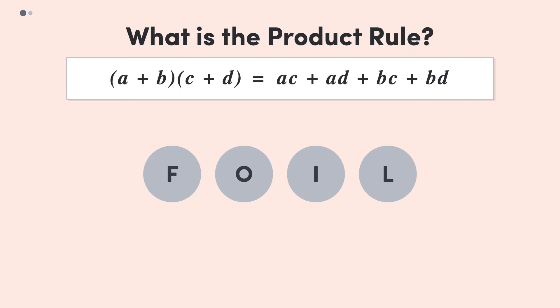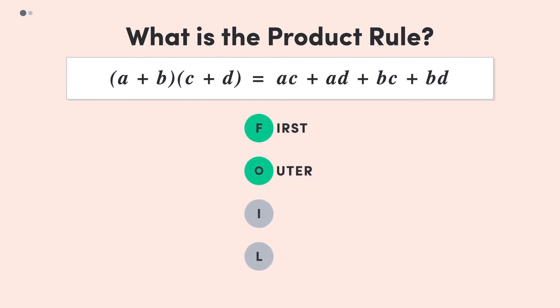FOIL stands for First, Outer, Inner, Last. That is, first we take the outer term, a, and multiply it by c and d, and then we do the same for the inner term, b.